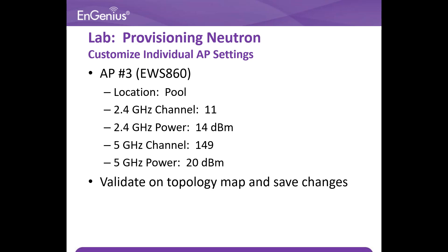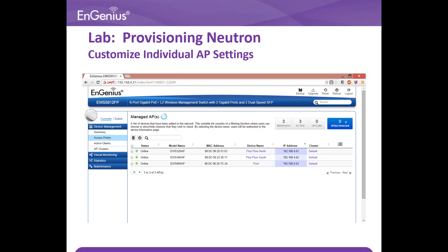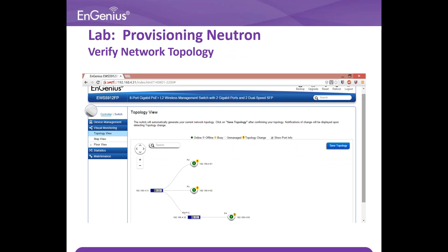Next, make changes to AP3 which is the EWS 860 as shown in the slide. Once done, validate the topology and save changes. This will be the changes made to AP3 as shown. From the access point tab, this is where you can customize the AP individually by clicking on the device name. This is the topology view. Simply save topology and that will remove the exclamation mark from it.